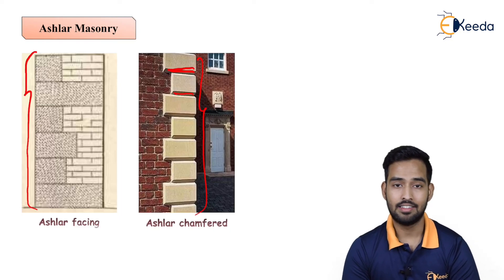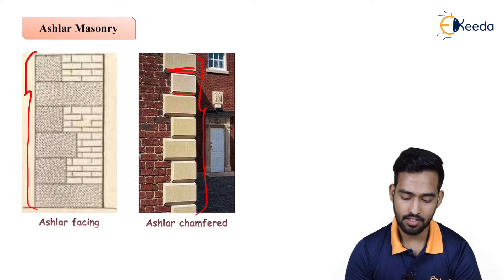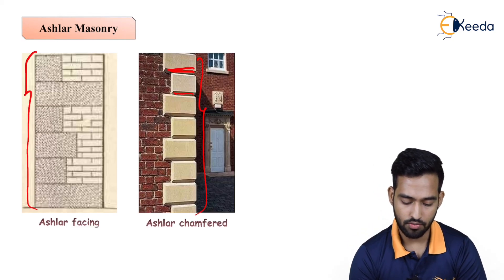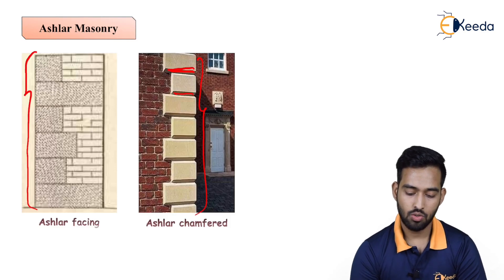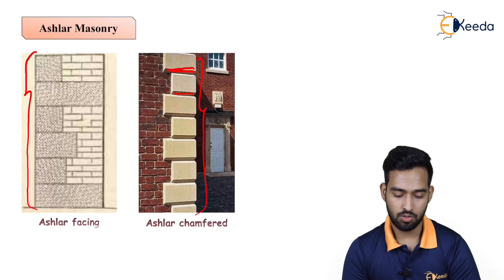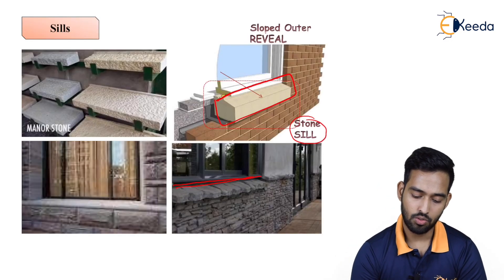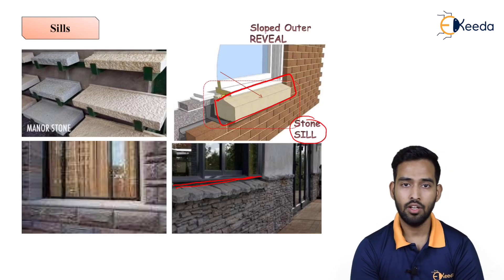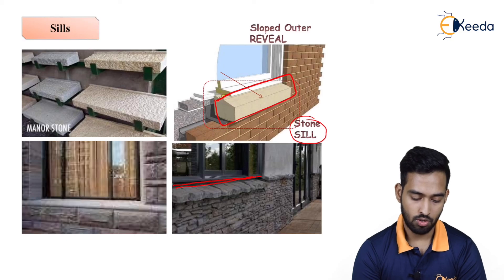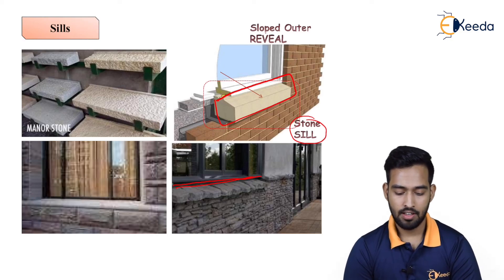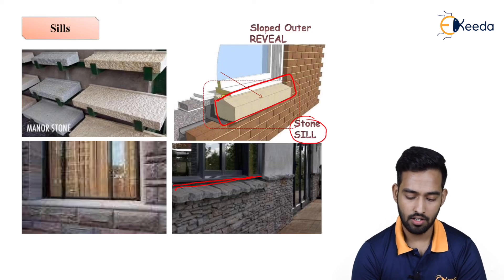Then comes sills. Sills are generally the lower portion of your windows. We require stone for the sealing purpose also — sills are provided to give strength to your windows so that they can take some amount of loading. They are also available in different sizes and shapes and can be used below the windows.